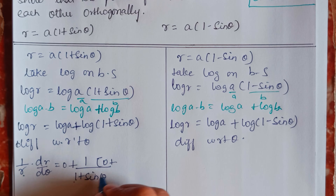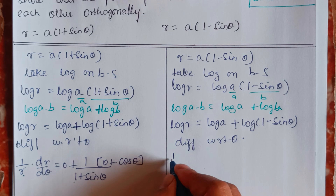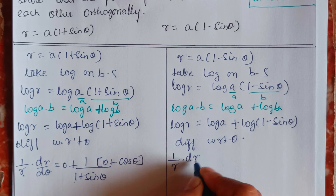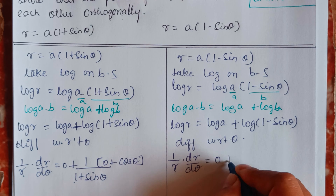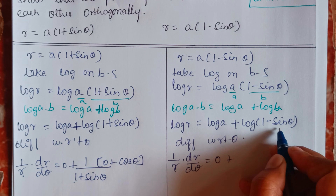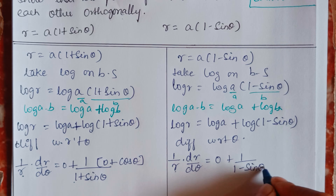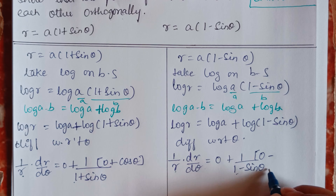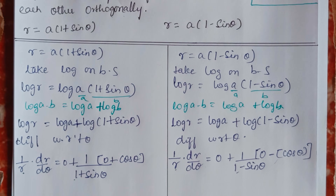Similarly, for the second curve: log r = log a + log(1 − sinθ). Differentiating: (1/r)(dr/dθ) = 0 + [1/(1 − sinθ)] times the derivative of (1 − sinθ). The derivative of 1 is 0 and the derivative of sinθ is cosθ, so this gives −cosθ/(1 − sinθ).